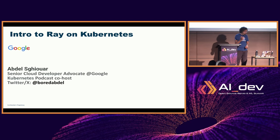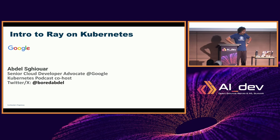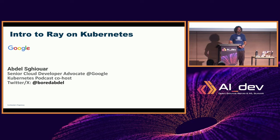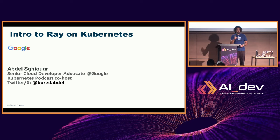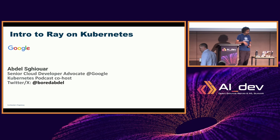My name is Abdel. I'm a developer advocate at Google. I co-host a podcast called Kubernetes Podcast by Google. I mostly work on Kubernetes, hence my T-shirt. Ray has been a framework rising in popularity for AI and ML workloads since the boom of LLMs, and since the Ray operator - or the Kube operator for Ray - was open-sourced. That's why I started being very interested, because Google is one of the companies focusing quite a lot on that operator and making sure our platform can run it properly.